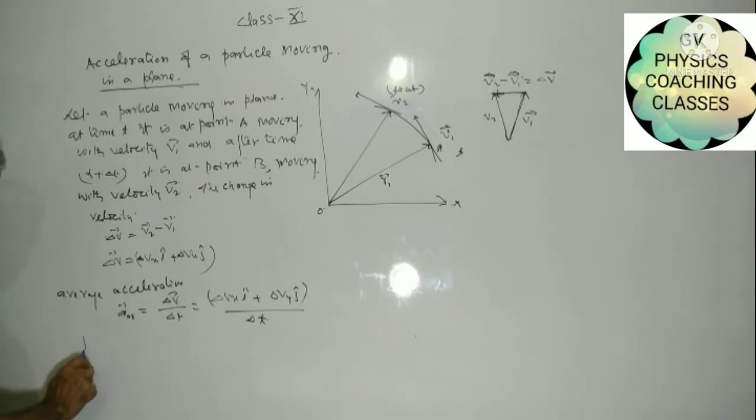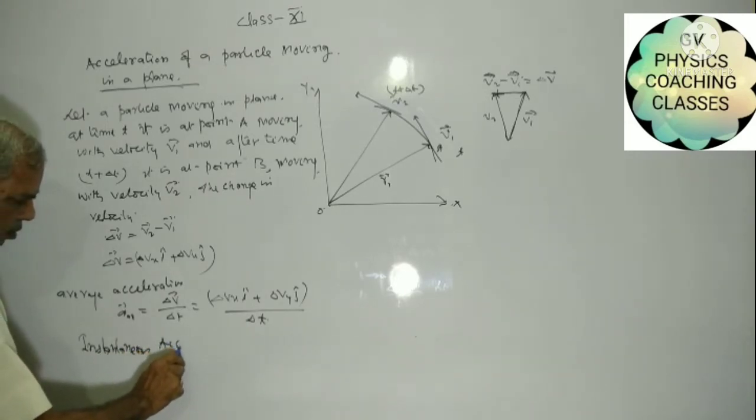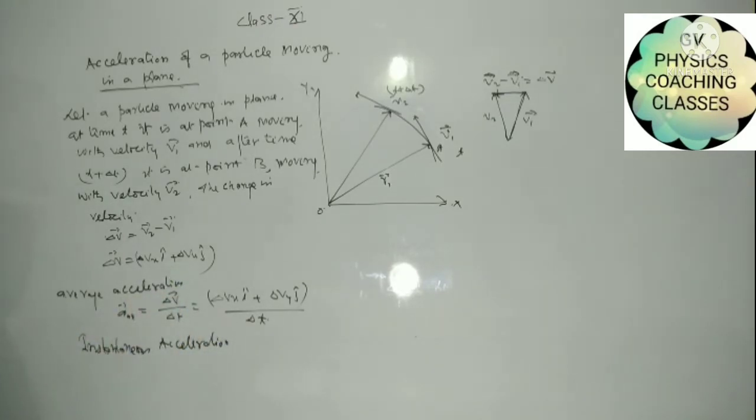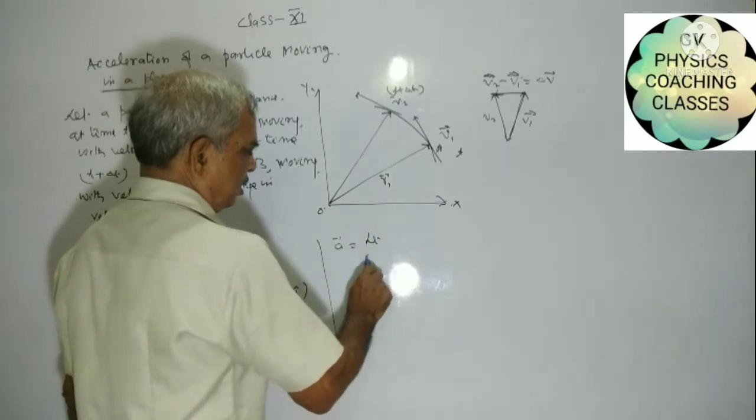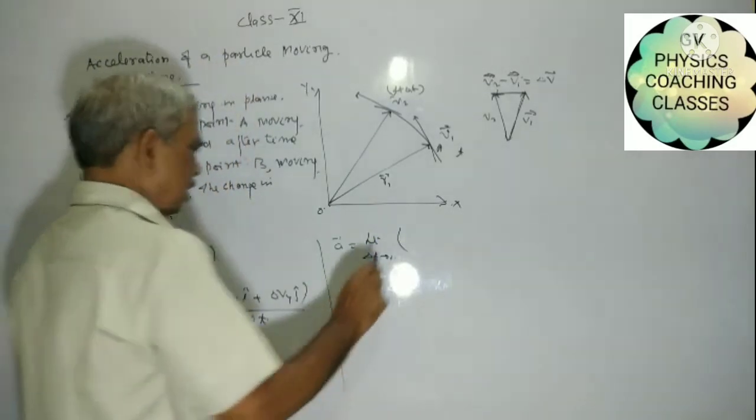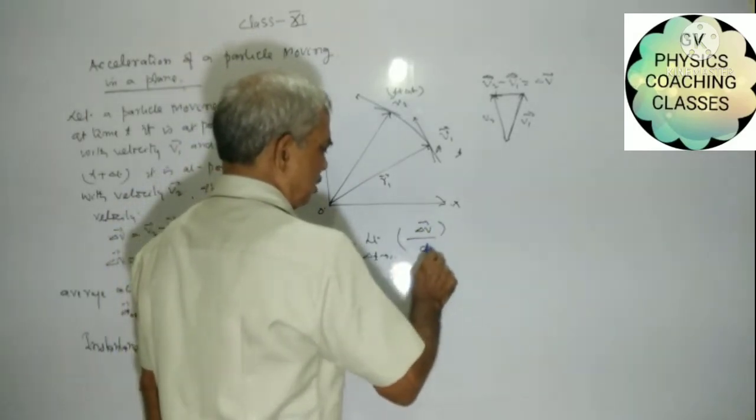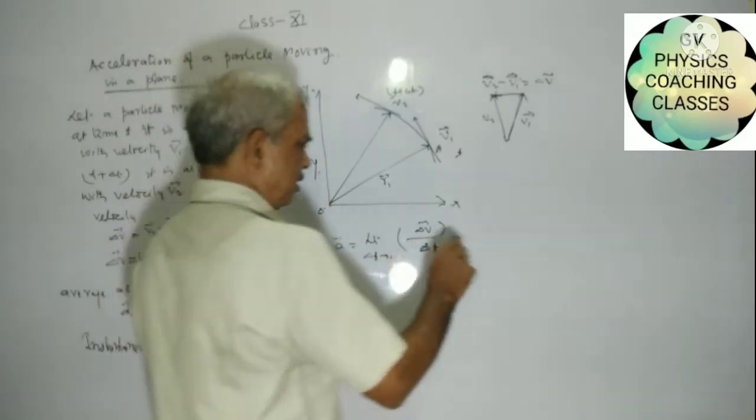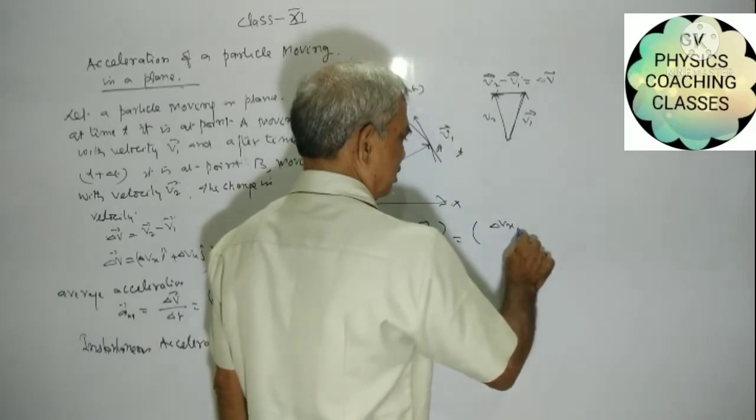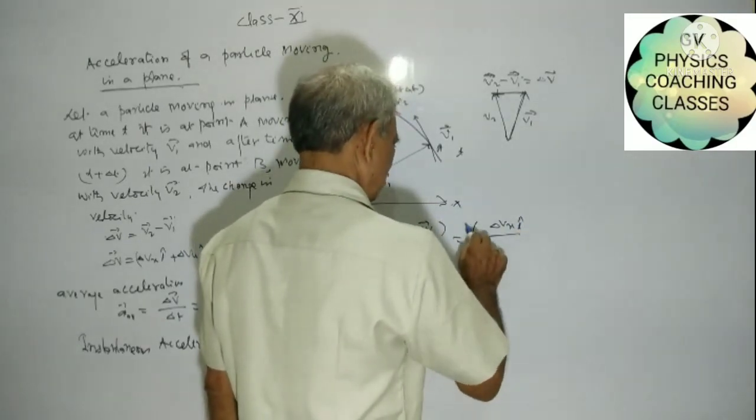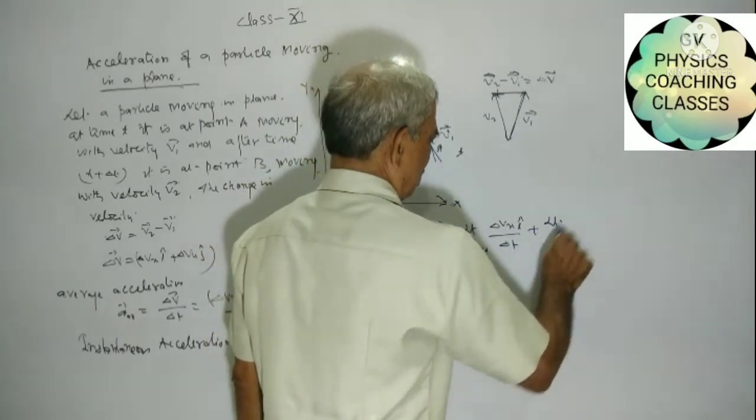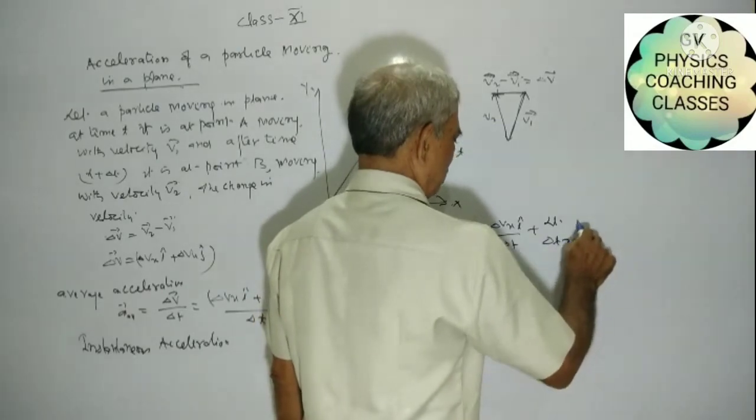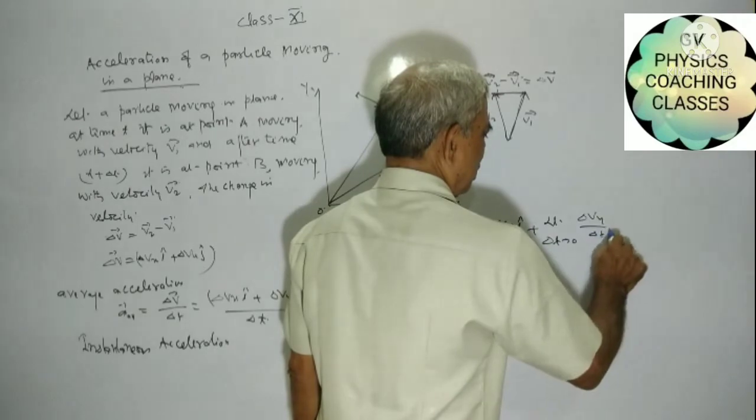Taking instantaneous acceleration: limit as delta T tends to zero, or delta V upon delta T.